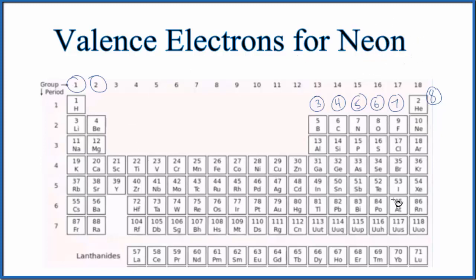The first way is to look at the periodic table. When we find neon on the periodic table, it's in group 18, sometimes called 8A.